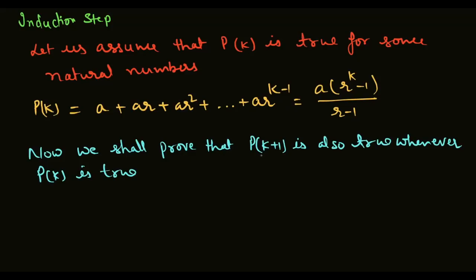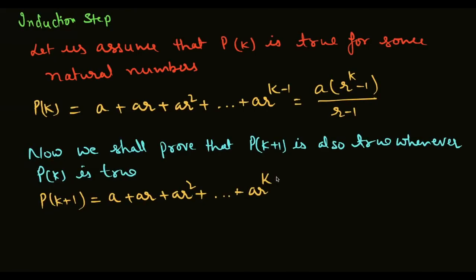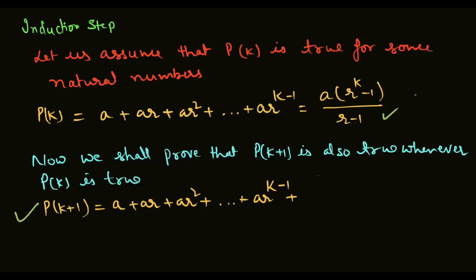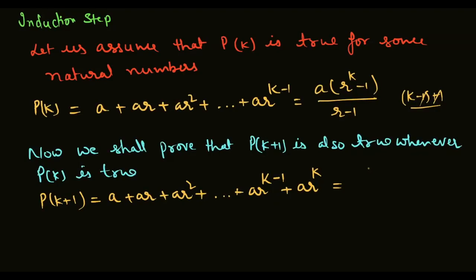We shall prove that Pk+1 is also true whenever Pk is true. Pk+1 = a + ar + ar² + ... + arᵏ⁻¹ + next term देखिये — next term arᵏ⁺¹⁻¹ होगा, यानी arᵏ। So Pk+1 = a(rᵏ⁺¹ - 1)/(r - 1).